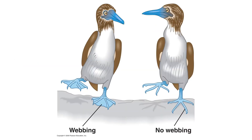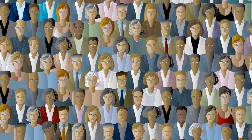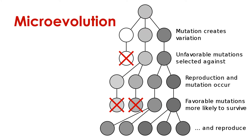Inherently, there is variation in all species. Humans, of course, are no exception. We vary in eye color, hair color, skin color, height, and weight. Some people can roll their tongues while others cannot. In microevolution, the frequencies of certain characteristics change over time — some become more common, while others become more rare or disappear entirely.